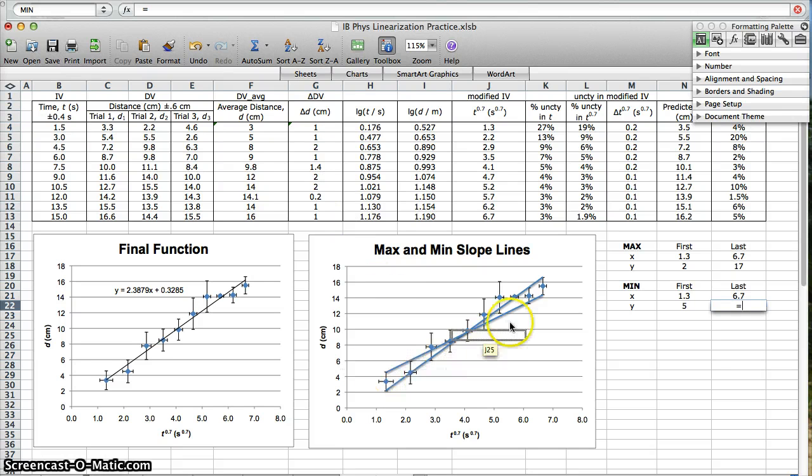My min slope line connects to the bottom of the last error bar. So what's the last y value? It's this one, 16. But then, for the min line, I went down the error bar. So I subtract the uncertainty.